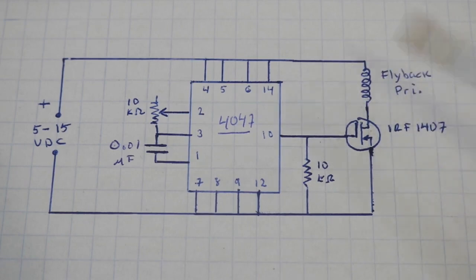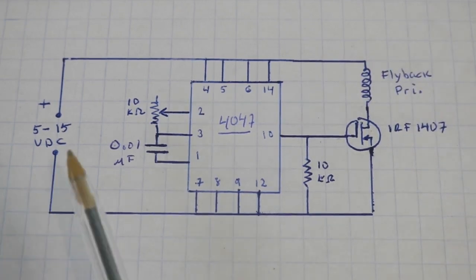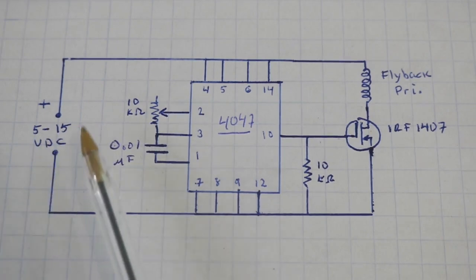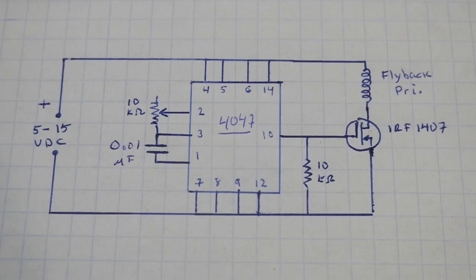I will now explain how to make your primary. You can feed the circuit with 5 to 15 volts DC, depending on the power that you want at the output and the type of flyback.